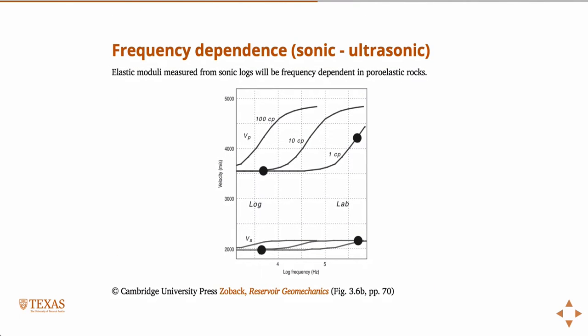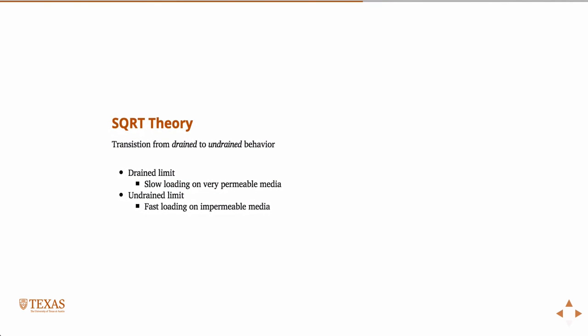Here's another example. These are curves of P-wave and S-wave velocities — velocity versus frequency. On the left-hand side are measurements done with ultrasonics. Sonic logs have frequencies in the range of kilohertz, while ultrasonics are in the megahertz range. These were done at the same time in the lab using measurement techniques equivalent to those used in the field. You can see quite a bit of difference in the measurement, so you have to understand those measurements to understand the modulus.